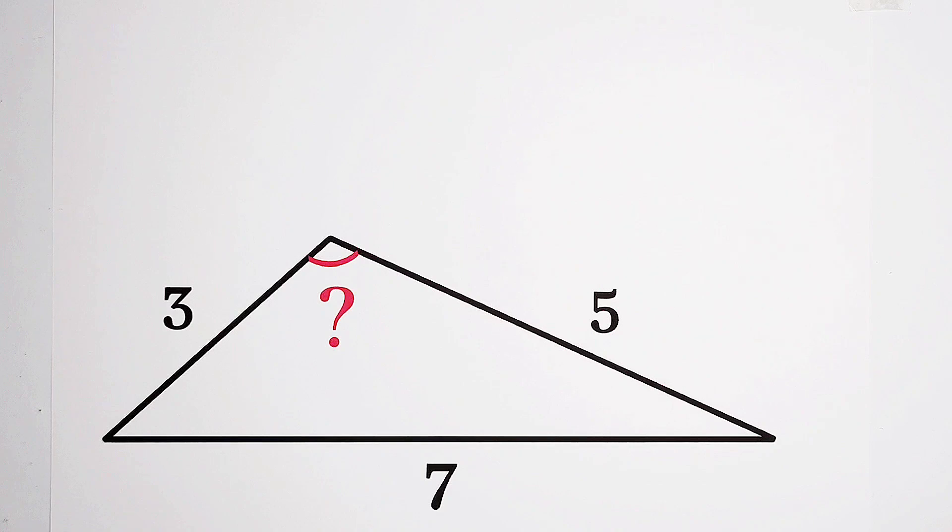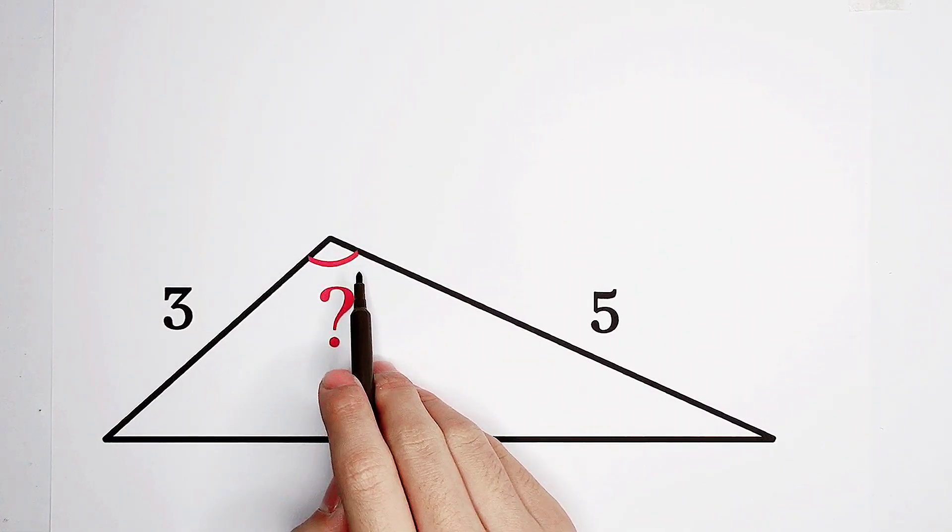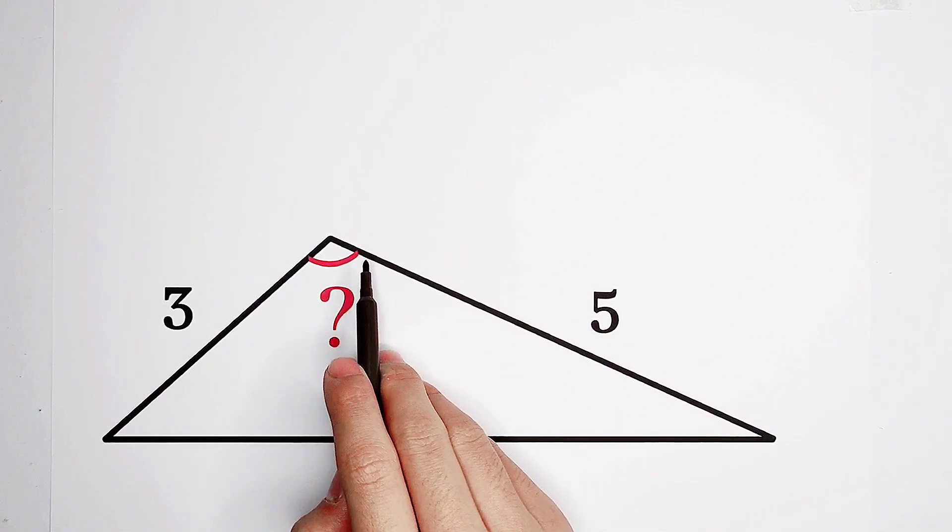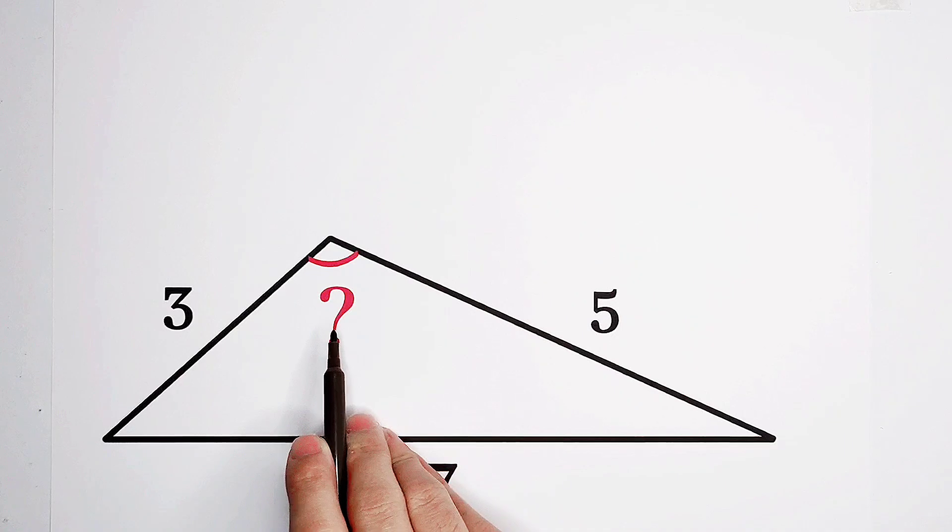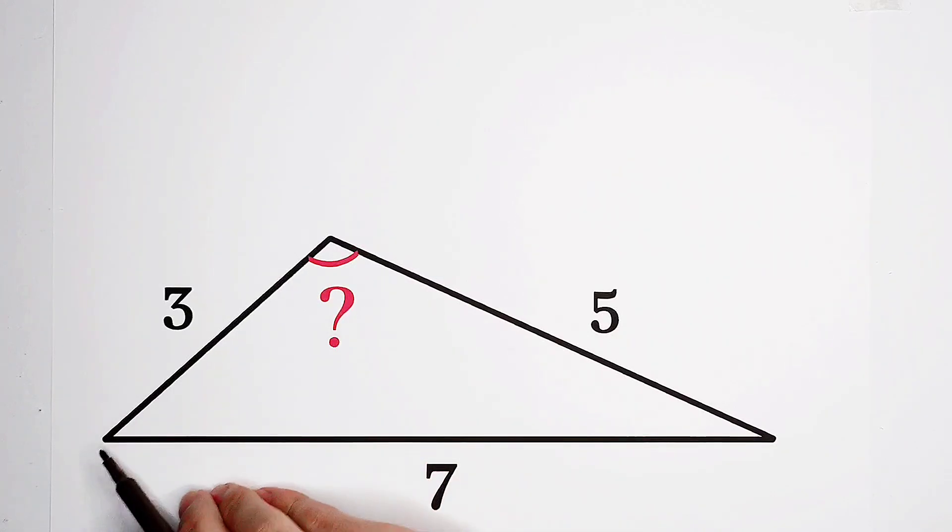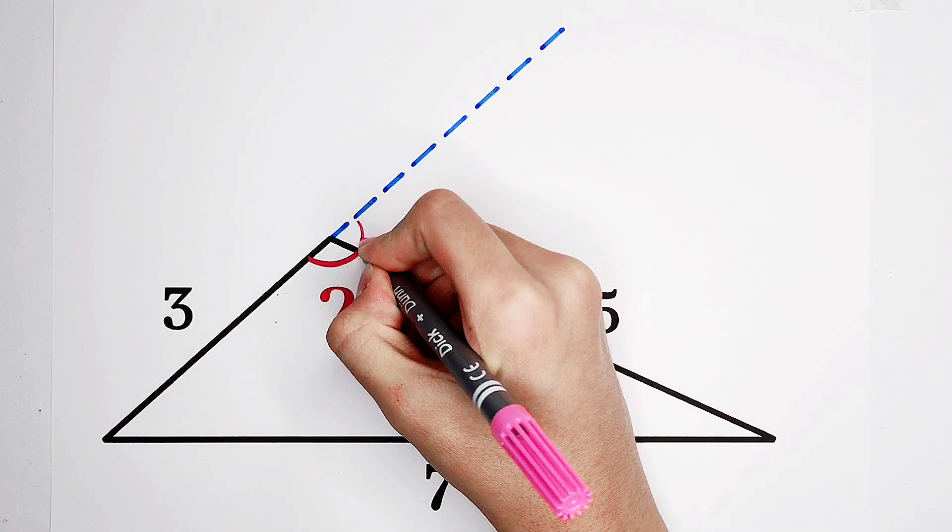The key of this method is to solve for the adjacent angle firstly, and then 180 degrees minus its adjacent angle is the degrees of this angle. So now, what I'm going to do? Guess what? Of course, extend this side.